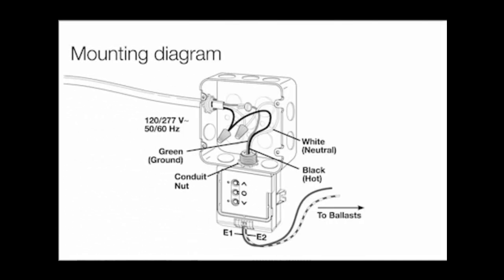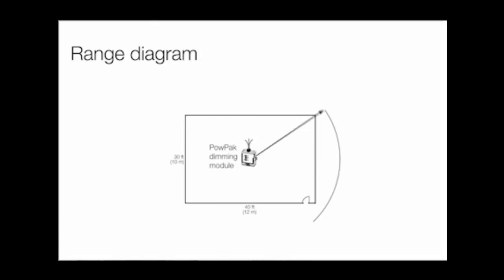The PowPak dimming module is easily mounted to a junction box or fixture knockout. Install the PowPak in the center of the room for maximum RF coverage. Ensure that all wireless transmitters are within 30 feet of the PowPak module.